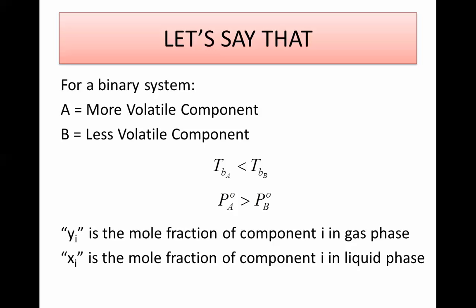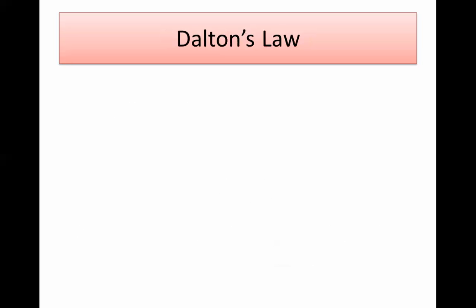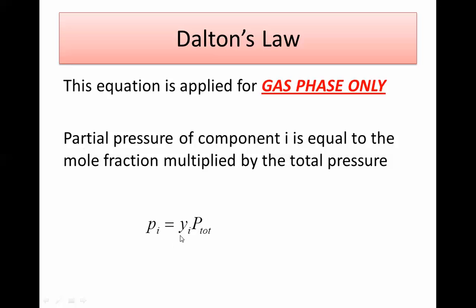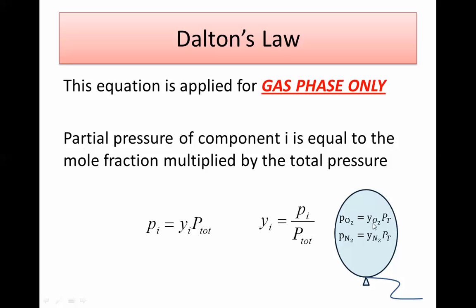The two main governing equations are Dalton's law and Raoult's law. Dalton's law applies for the gas phase only — no liquid is included. It states that the partial pressure of component i equals the mole fraction of that component in the vapor phase multiplied by the total pressure. For example, the partial pressure of oxygen in a balloon containing oxygen and nitrogen equals the mole fraction of oxygen multiplied by the total pressure. No vapor pressure or liquid term is involved.